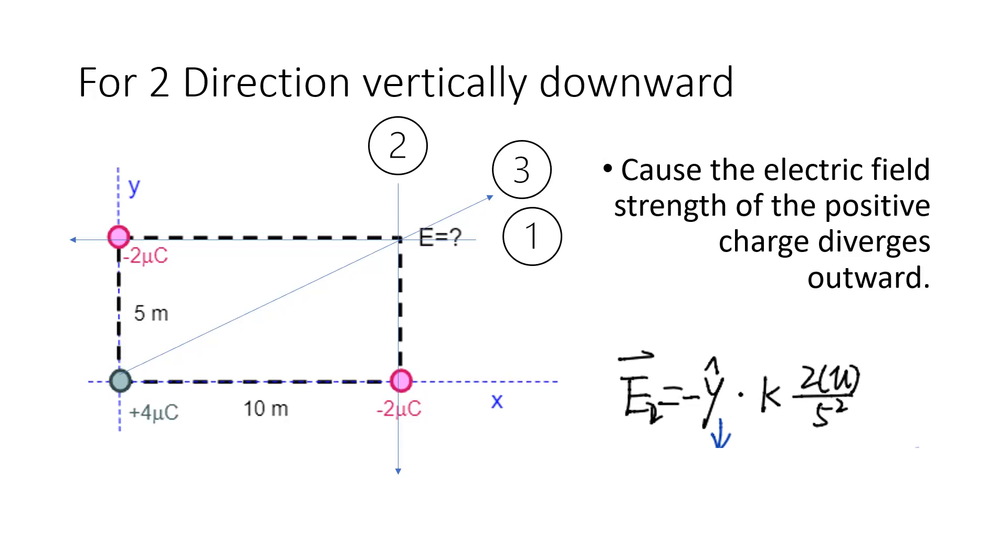Because the electrical field strength formula is E equals KQ over R squared, we put minus 2µC and 5m into the formula. Then we can get E equals negative Y times K times 2µC over 5 squared.